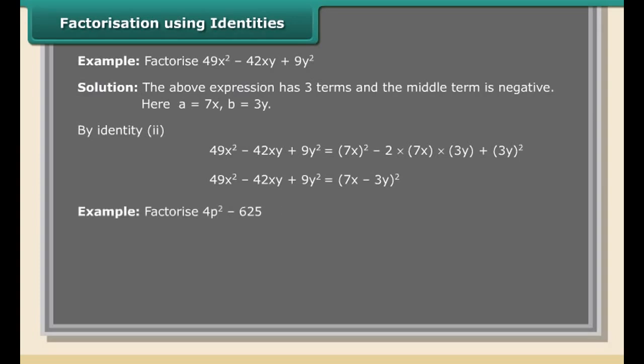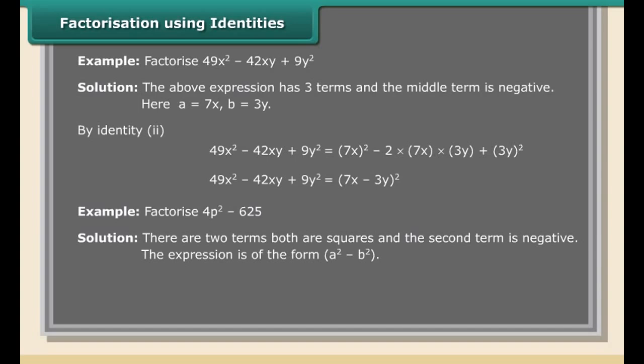Example: Factorize 4p² − 625. There are two terms, both are perfect squares, and the second term is negative. The expression is of the form a² − b². By identity 3: 4p² − 625 = (2p)² − (25)² = (2p + 25)(2p − 25).